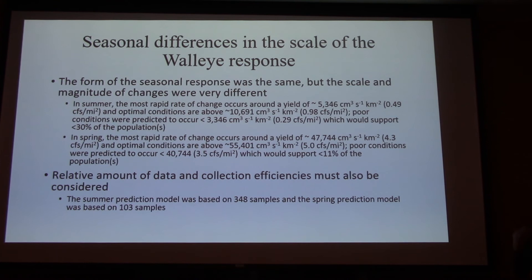The optimal conditions are over about one. And you get down into very poor conditions when you get below about 0.29 CFS per square meter, which will only support about a third, 30% of the population.